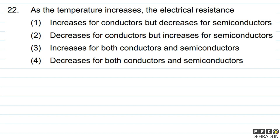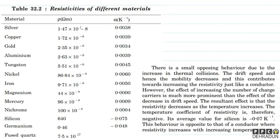The question says: as the temperature increases, the electrical resistance — and there are 4 options — we have to comment on conductors and semiconductors. So here, a table of resistivities of different materials is given. We can see that for conductors, alpha is positive.